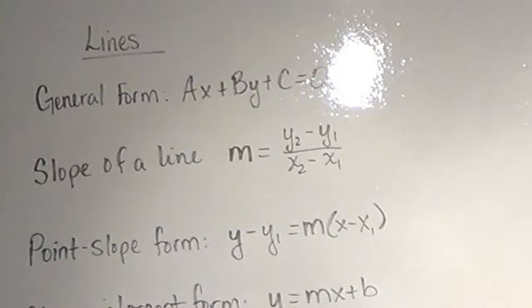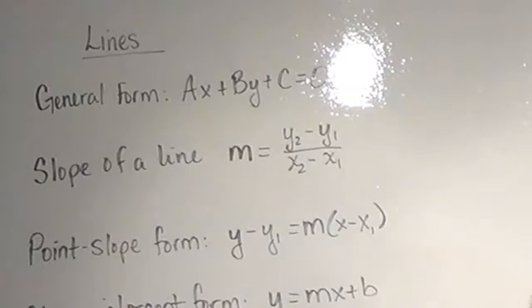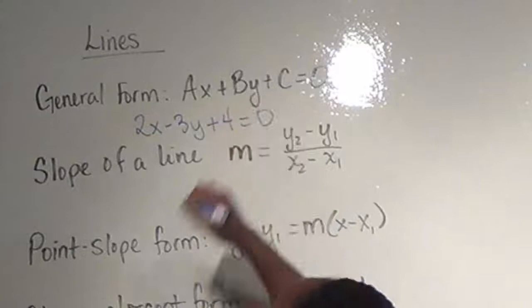The first is just the general form of an equation of a line. The general form looks like ax plus by plus c equals zero. In this form, a, b, and c are real numbers, and we assume that a is positive. For a simplified version, we like a, b, and c to be integer values, so we try not to have any fractions or decimals. For example, 2x minus 3y plus 4 equals zero is a linear equation in general form.